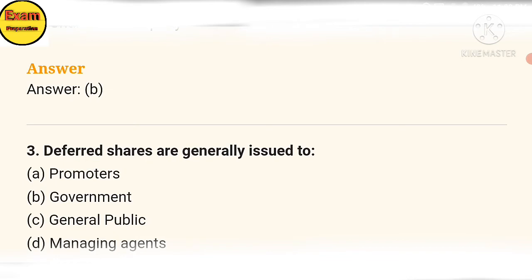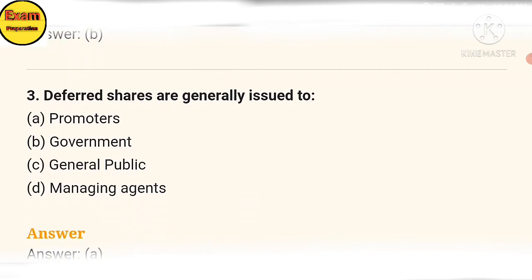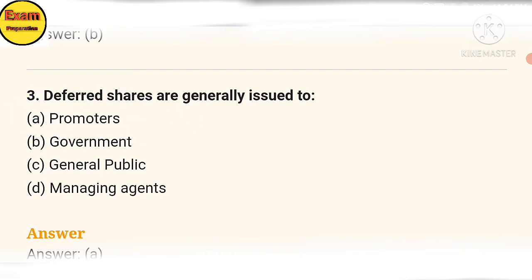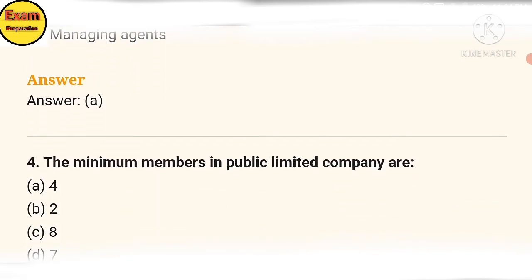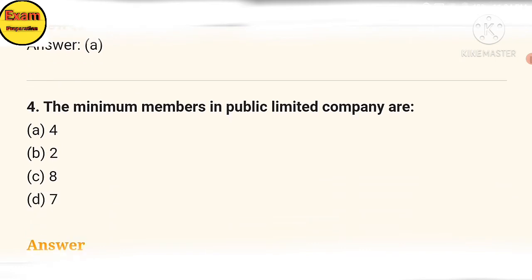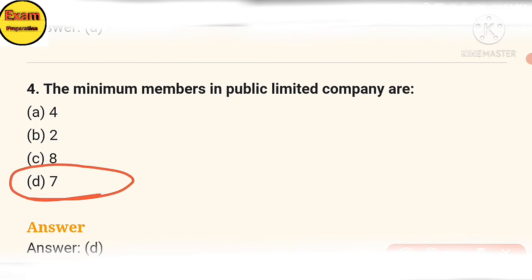Third question: shares are generally issued to — (a) promoters. The answer is option A: promoters. Fourth question: the minimum number of shares in public limited companies — the minimum number of members is one.